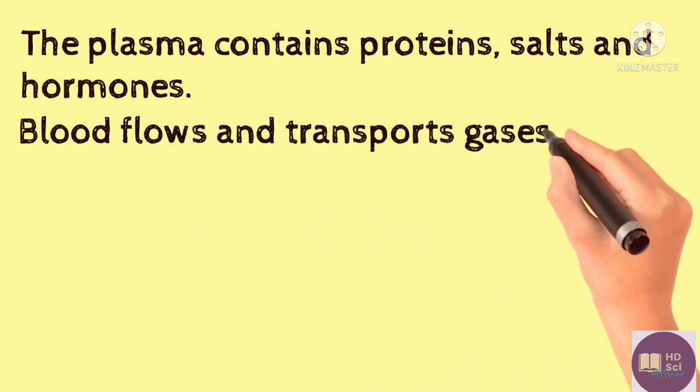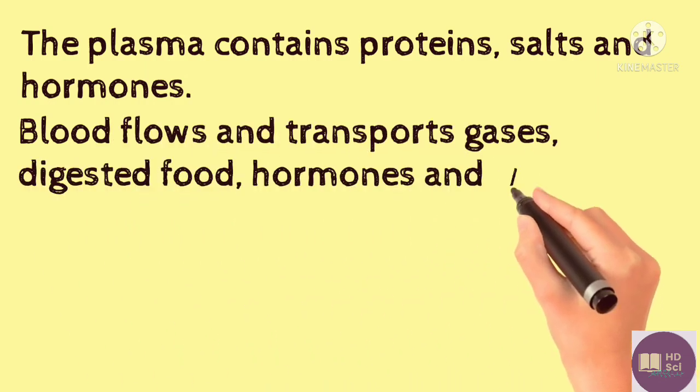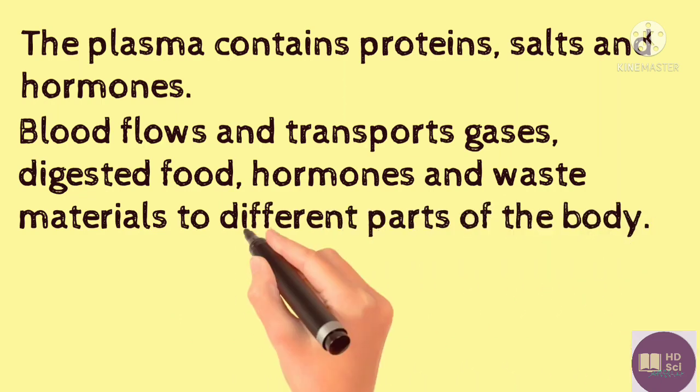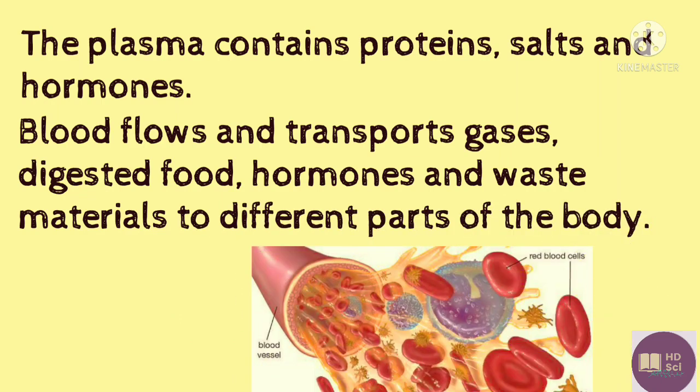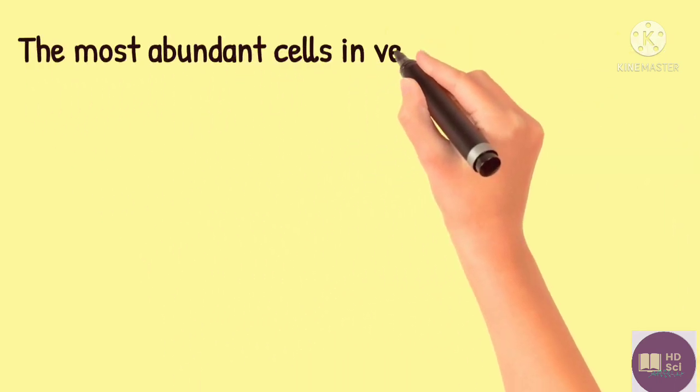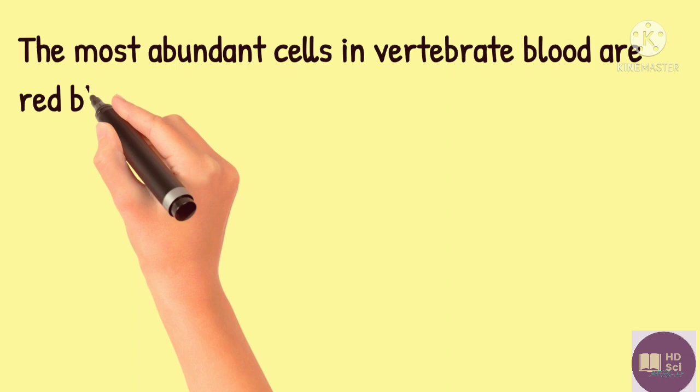Blood flows and transports gases, digested food, hormones, and waste materials to different parts of the body. The most abundant cells in vertebrate blood are red blood cells.